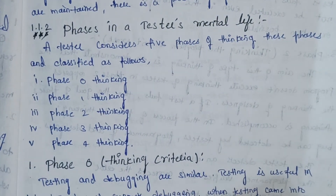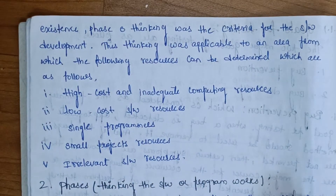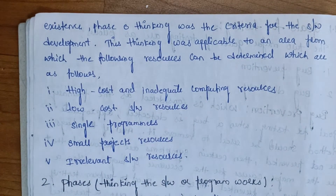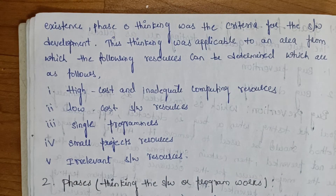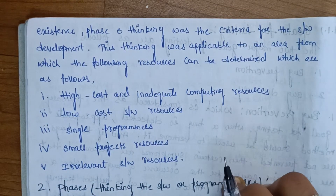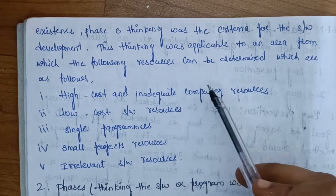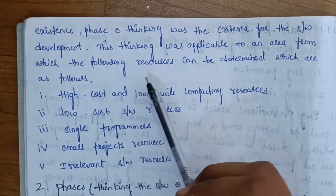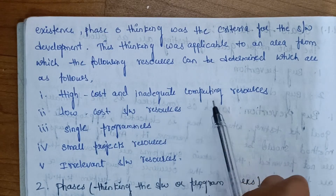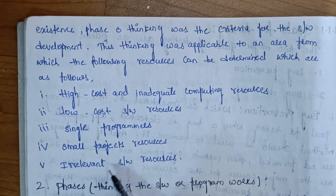It supports debugging when testing comes into existence. Phase 0 thinking was the criteria for software development. This thinking was applicable to an area from which the following resources can be determined: high cost and inadequate computing resources, low cost software resources, single programmers, small project resources, and irrelevant software resources.